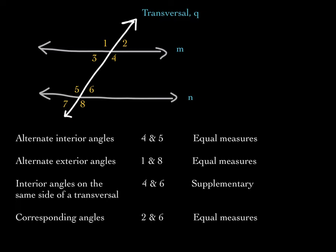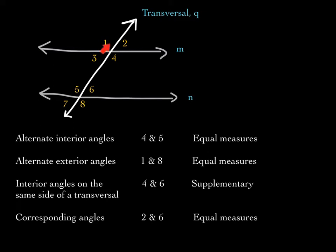Finally, corresponding angles, like two and six, are on the same side of the transversal. Angle two is above line M and angle six is above line N, so these are corresponding angles and they're equal. Angles four and eight are also corresponding — on the same side of the transversal and both beneath the parallel lines. Angles one and five, and three and seven, are also corresponding pairs. Corresponding angles have equal measures.